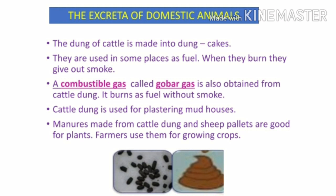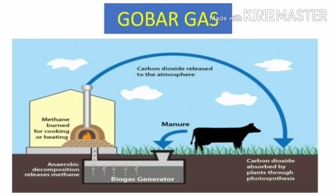Cattle dung is used for plastering mud houses. Manures made from cattle dung and sheep pellets are good for plants, and farmers use them for growing crops. The dung of cattle is also collected in a biogas generator.